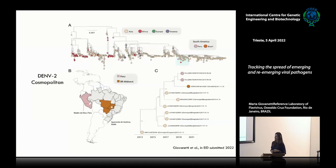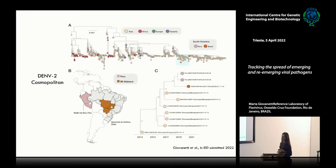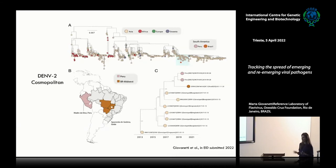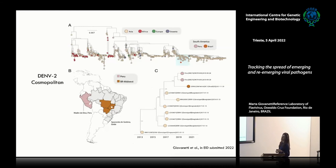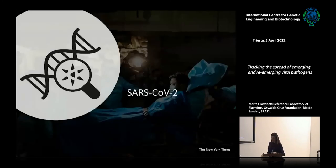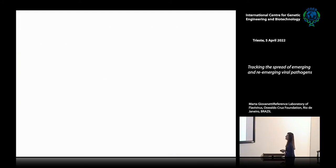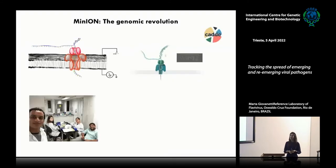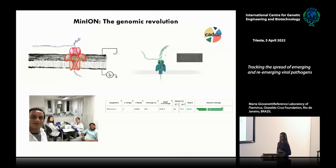This is really our last work in this area. We detected, for the first time, the circulation of the cosmopolitan genotype of dengue 2 in South America. We know that it is absolutely common in Asia. But we detected the first cases both in Goiás, located in Midwest Brazil, as well as in Peru. This work was performed in collaboration with the CDC from Puerto Rico. Of course, we also tried to give our contribution to the SARS-CoV-2 pandemic, using nanopore sequencing to obtain complete genome sequences from this virus, both in Brazil, in Italy, as well as in South Africa.